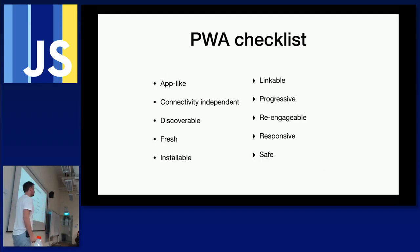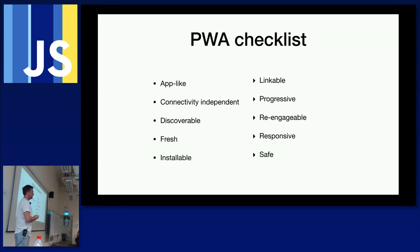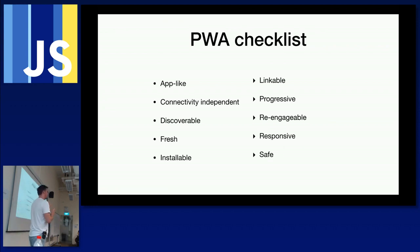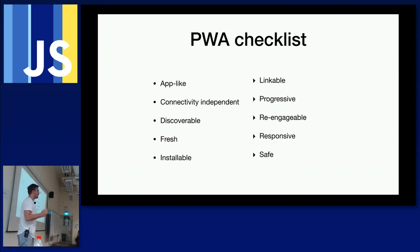Fresh means the app automatically pulls the latest content when there's a connection. Installable means you can install it onto a mobile device. Linkable: you can link to it — unlike native apps, because this is a website you can link to parts of it. Progressive: we talked about that. Re-engageable: once installed, users can get back easily via a launcher icon. Tap it and your app opens.